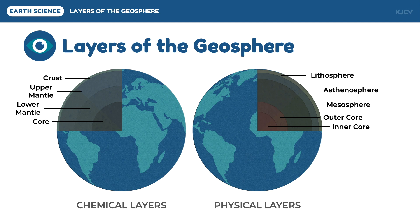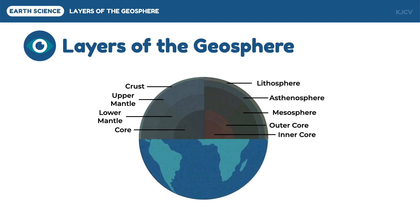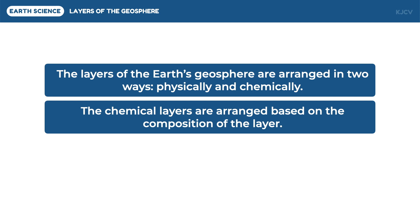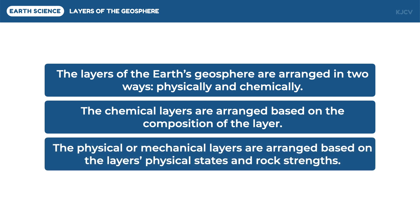Putting the two arrangements of the layers of the geosphere side by side, we can see the relationships of their characteristics. For example, the upper mantle has a region of high rigidity as seen in the lithosphere and mesosphere, and high plasticity as seen in the asthenosphere. The mesosphere is made up of two different rigid material types — bridgmanite and peridotites. And the core, made up of an iron-nickel alloy, exists in two physical states. To summarize: the layers of the earth's geosphere are arranged in two ways — physically and chemically. The chemical layers are arranged based on composition, and the physical or mechanical layers are arranged based on physical states and rock strengths.